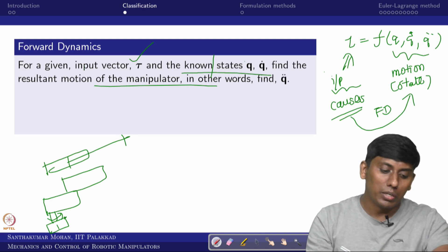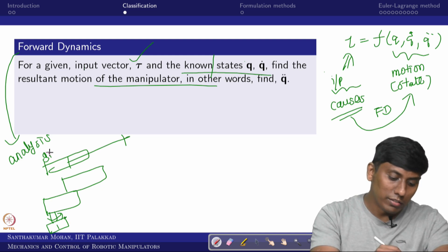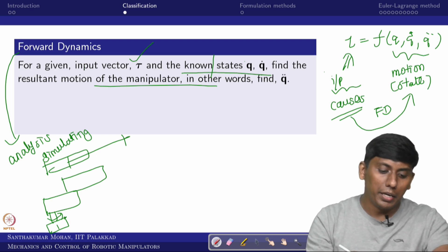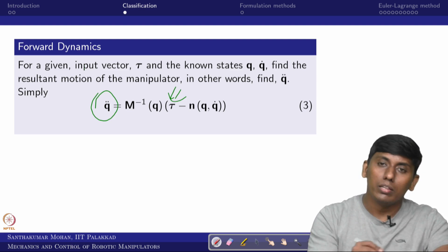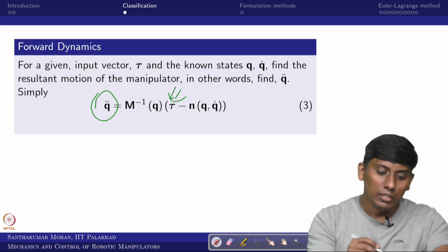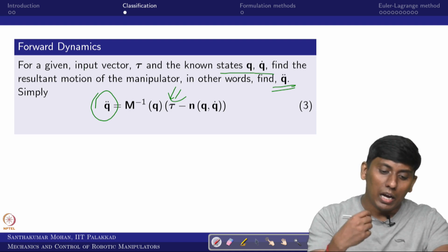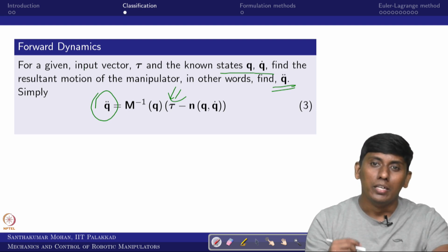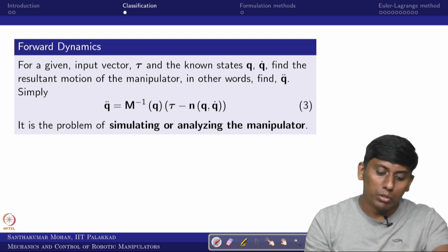Forward dynamics is similar to differential kinematics but maps the input vector to the unknown q-double-dot, from which you can integrate to get q-dot and q. It is analogous to an open-loop analysis: you give a known input and see the system output. Like kicking a football and watching how it rolls — you just apply force and observe the resulting motion.